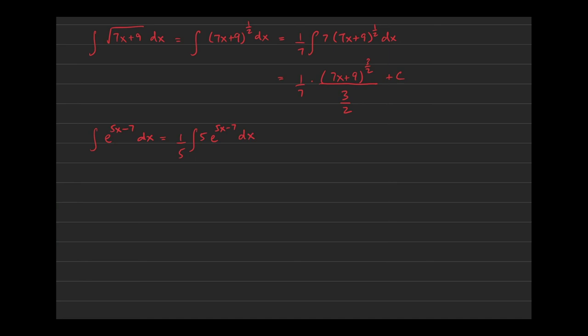So I can multiply the outside by 1/5 and put a 5 on the inside, giving (1/5) times the integral of 5 e^(5x - 7) dx. Now the derivative of the exponent is exactly in the problem. The answer is (1/5) e^(5x - 7) + C. Pause the video and convince yourself. In the next video, I'll talk about how u-substitution can solve all these questions — and you'll see that process is decidedly longer.